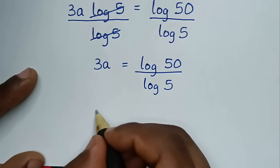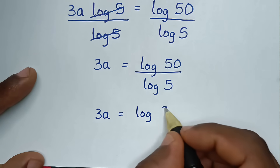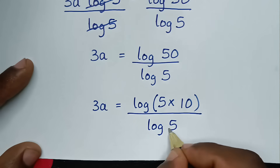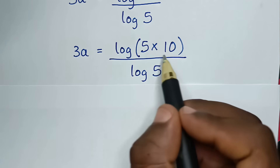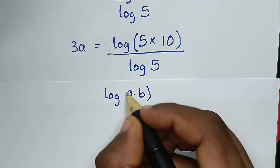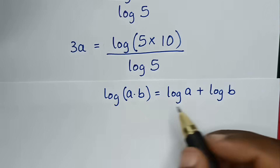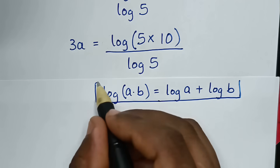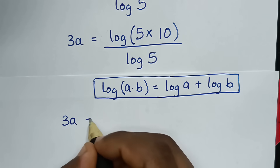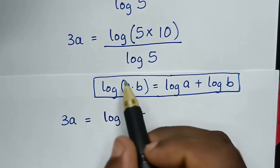Then in the next step, 50 is the same as 5 times 10, so we write log of (5 times 10) over log of 5. From here, log of (5 times 10) is in the form of the rule log of a times b equals log a plus log b. So 3a is equal to log of 5 plus log of 10, all over log of 5.